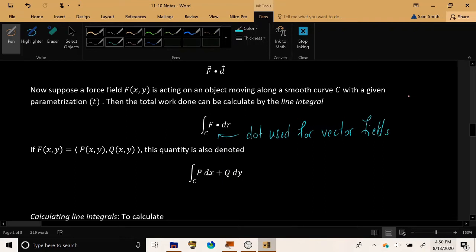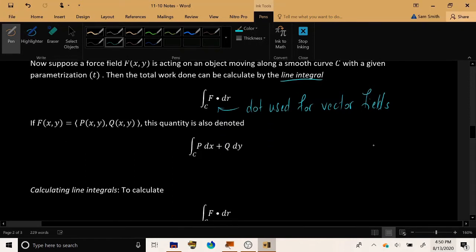Dot used for vector fields. When we want to calculate the line integral, we have the notation, the integral over the curve C, the vector field F, the dot product symbol, and then the closing DR. This is the notation for line integral for vector fields. And it can be used, for example, to calculate total work done by a force field.